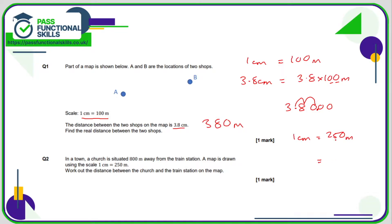Question two: the scale is 1 centimeter equals 250 meters, and we have a real-life distance of 800 meters. We need to find how many times greater 800 is than 250, so we divide 800 by 250, which gives 3.2. That corresponds to a map distance of 1 multiplied by 3.2, which is simply 3.2 centimeters.